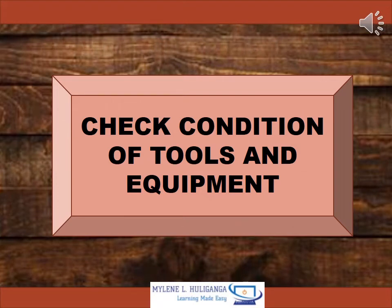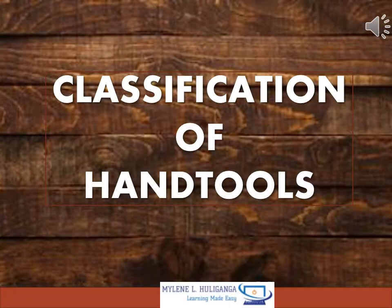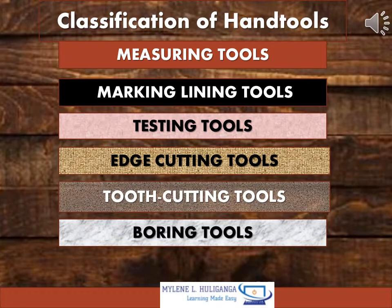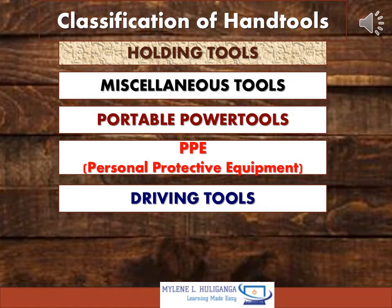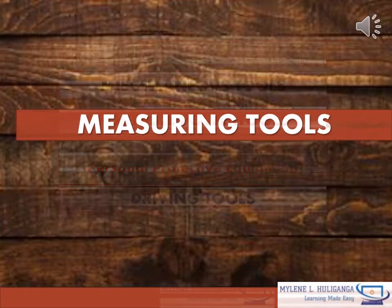Our topic is checking the condition of tools and equipment. Classification of hand tools: hand tools are classified according to their uses. These are measuring tools, marking and lining tools, testing tools, edge cutting tools, tooth cutting tools, boring tools, holding tools, miscellaneous tools, portable power tools, PPE or personal protective equipment, and driving tools.